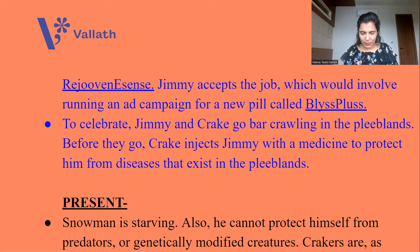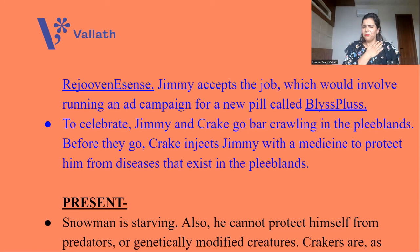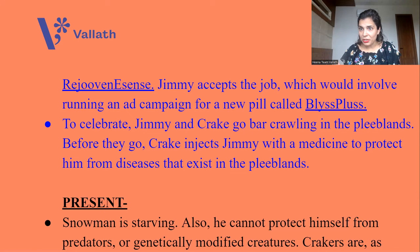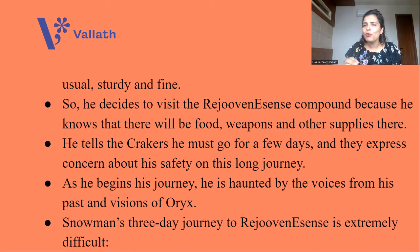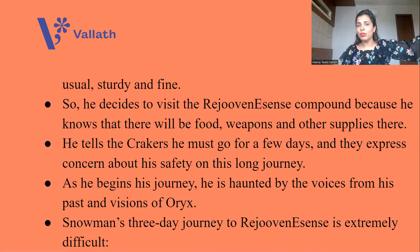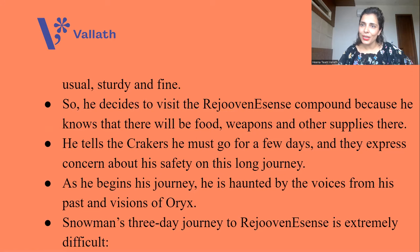Now let's come back to the present. Snowman — or Jimmy — is living with Crakers alone near the seashore. Snowman is starving; he does not have anything to eat. There is no civilization, and he cannot protect himself from predators or genetically modified creatures. Crakers, as usual, are sturdy and fine — they have been made to survive in any environment. So Snowman decides to visit the RejuvenEssence compound because he knows there will be food, weapons, and other supplies there. He has never left Crakers alone for more than a day, but this time he must go for three days. He tells the Crakers he must go, and they express concern for his safety. As he begins his journey, he is haunted by voices from his past and visions of Oryx.